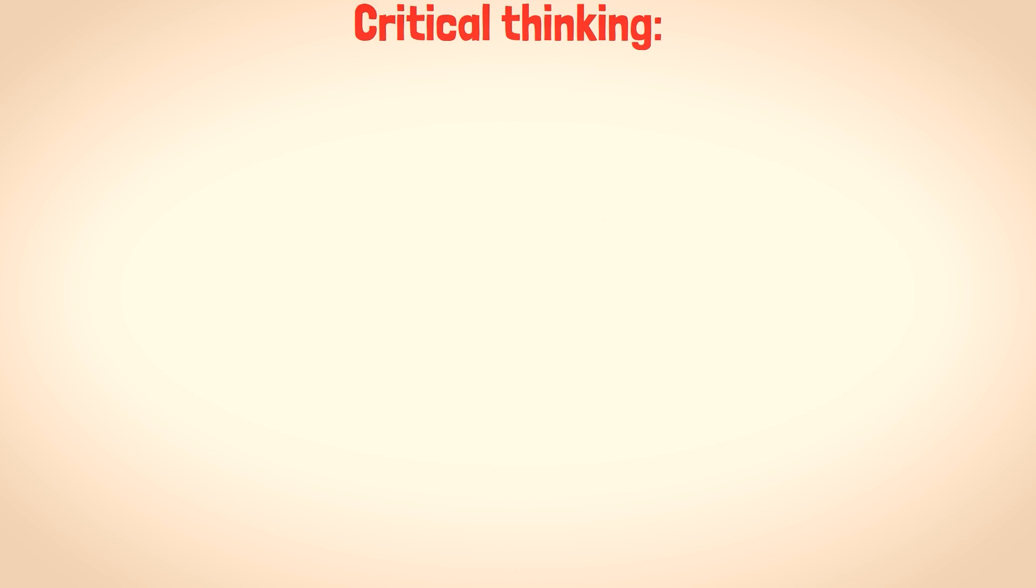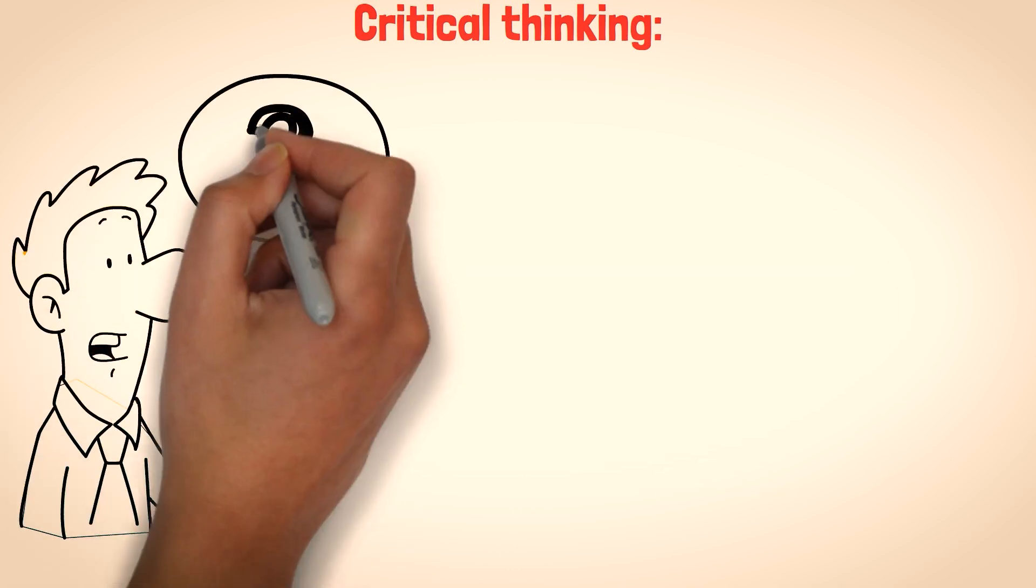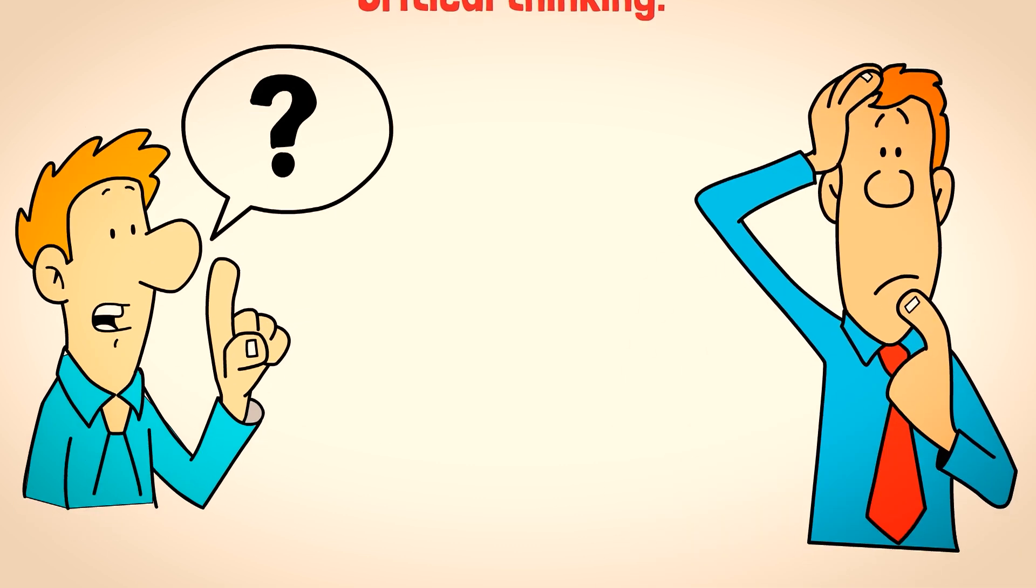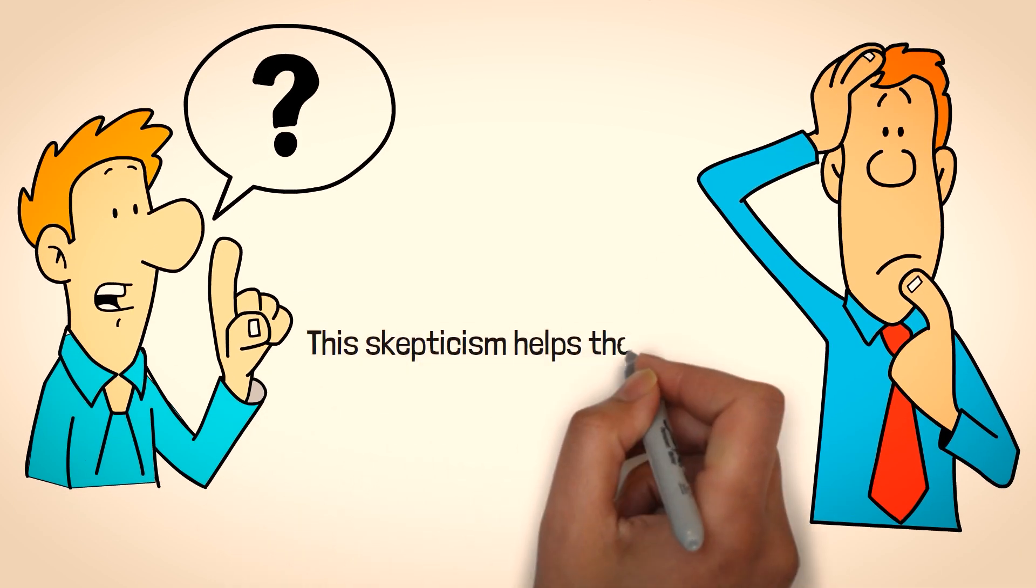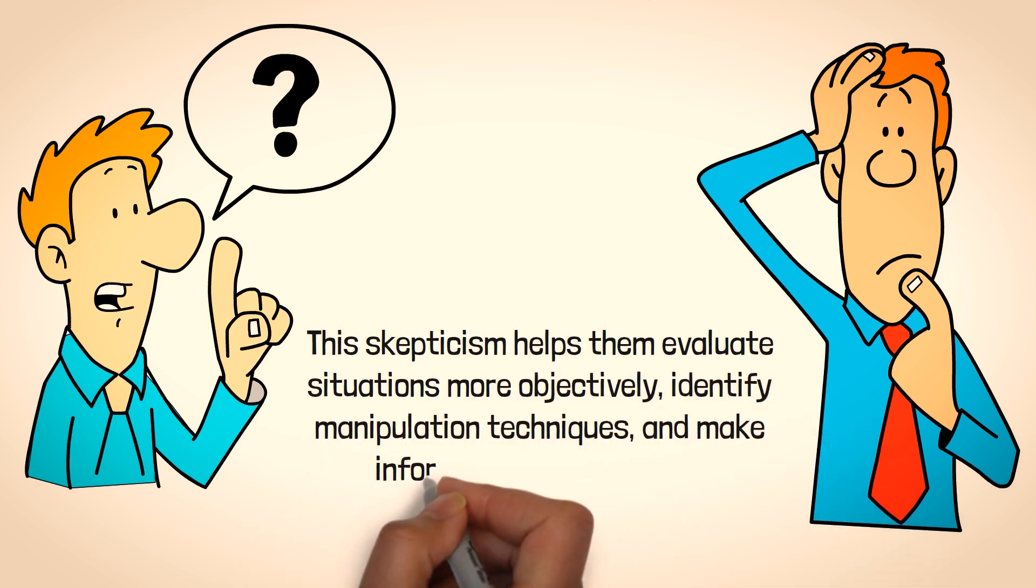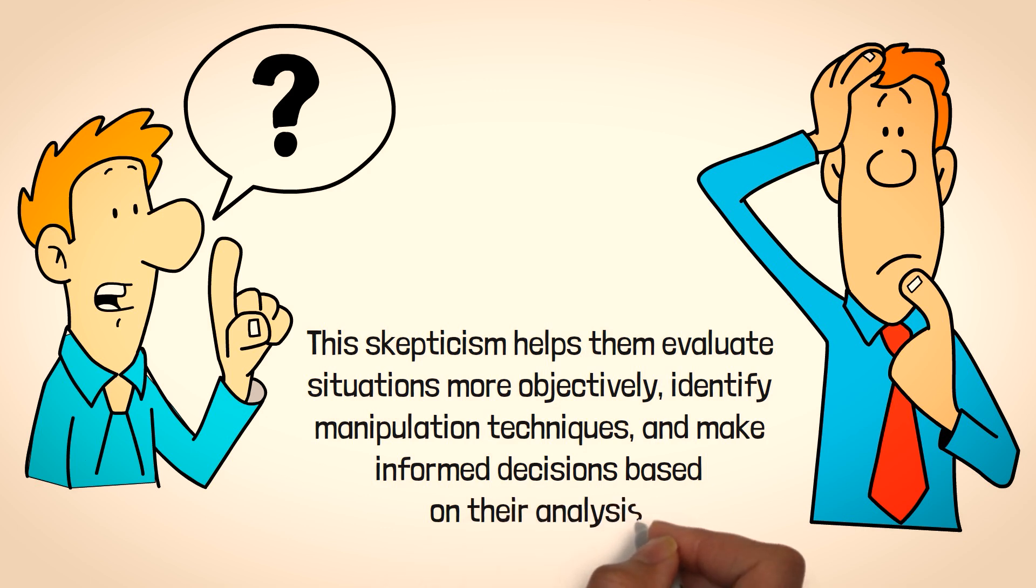Critical thinking. Sigma males often question information and motivations, seeking a deeper understanding before accepting or rejecting ideas. This skepticism helps them evaluate situations more objectively, identify manipulation techniques, and make informed decisions based on their analysis.